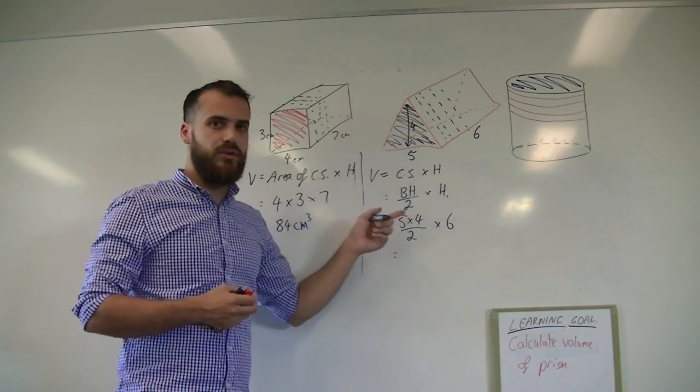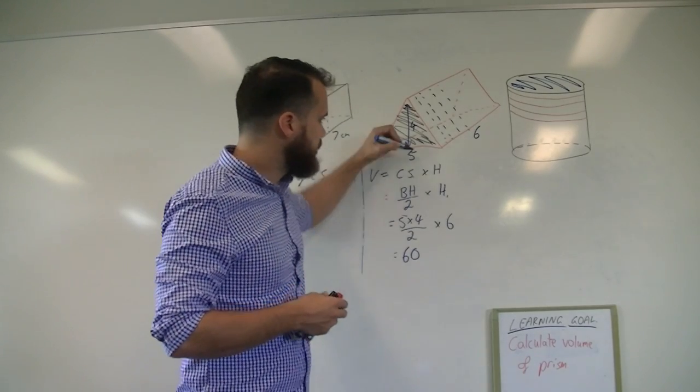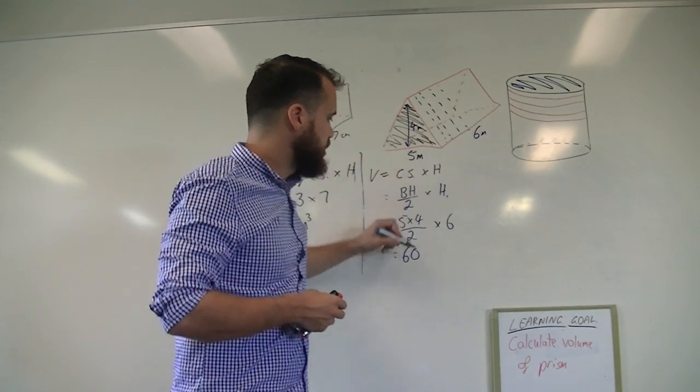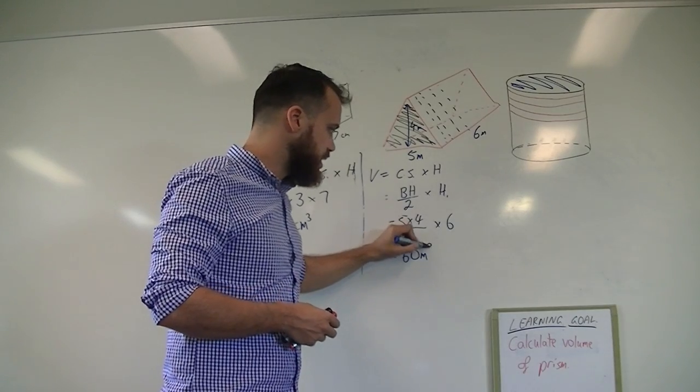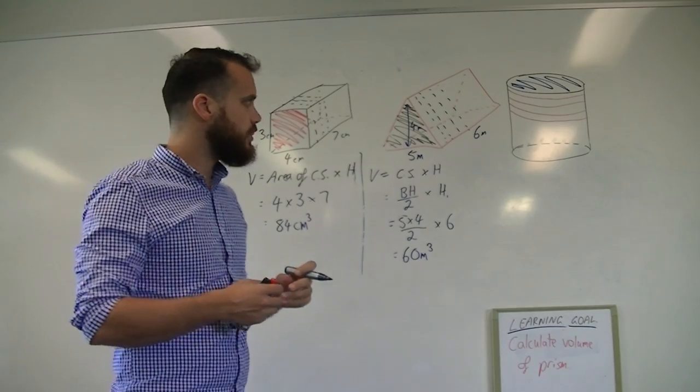So five times four is twenty divided by two is ten, times six should be sixty. We'll call this meters this time, it's quite a big object. Sixty meters. Again, it's a volume, so it's sixty meters cubed.